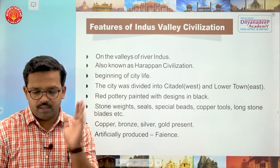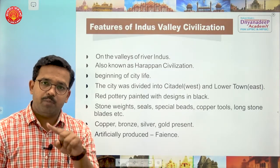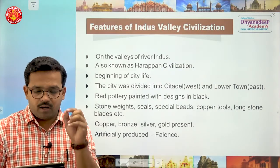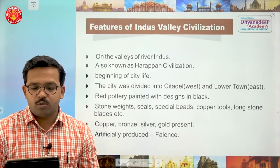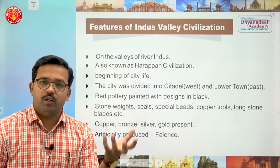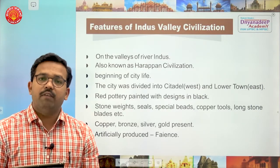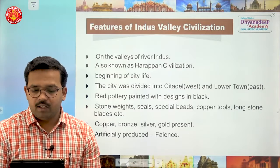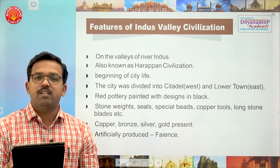Red pottery was there, painted with designs in black — remember, it is red pottery designed in black, not black pottery designed in red. Stone weights were present, meaning weights and measures like kilograms and volume measurements were present in Harappan Civilization. Special beads like small monies were there. Copper tools were present along with long stone blades.